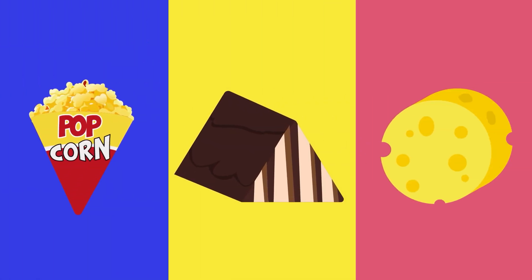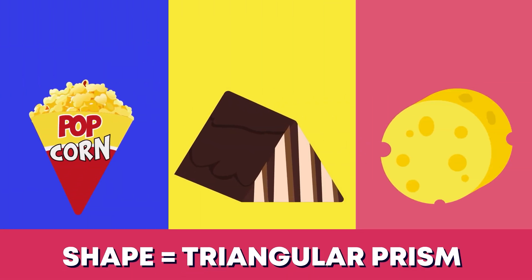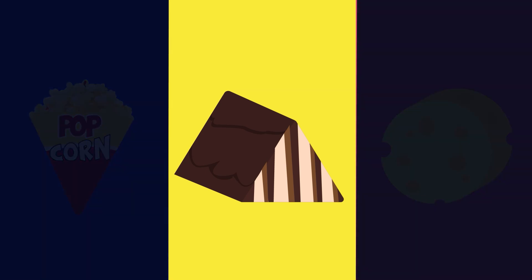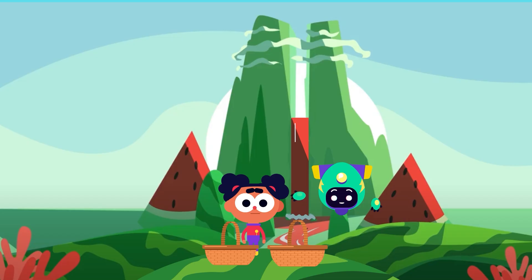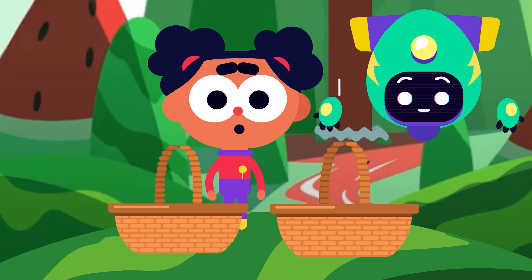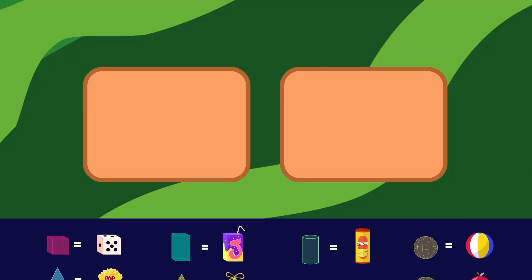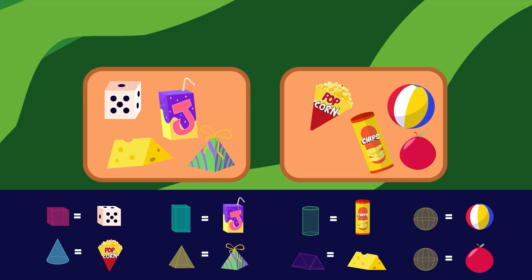Which other snack is a triangular prism? This cake is shaped like a triangular prism — super! Hey Mo, would you like to go on a picnic with me?